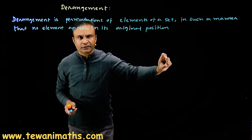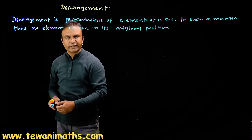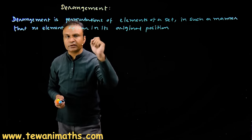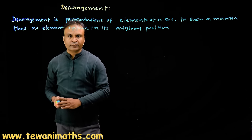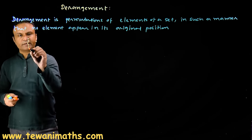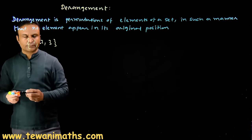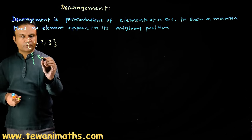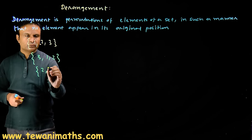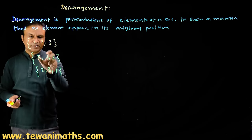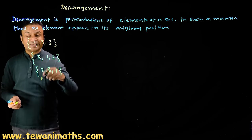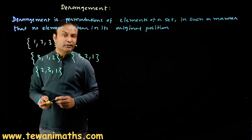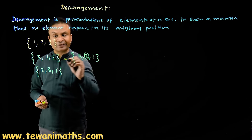In a set where you have n elements, we will do permutation taking all at a time, and derangement means no element is in its original position. For example, if we take a set of three elements {1, 2, 3}, then the possible derangements will be {3,1,2} and {2,3,1}. You can check that in these two arrangements no number is in its original position.